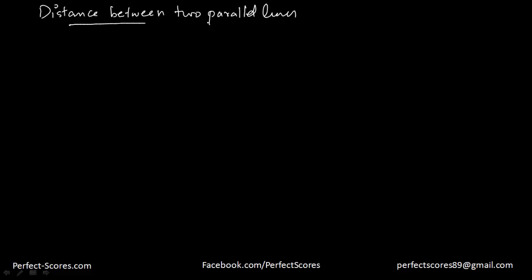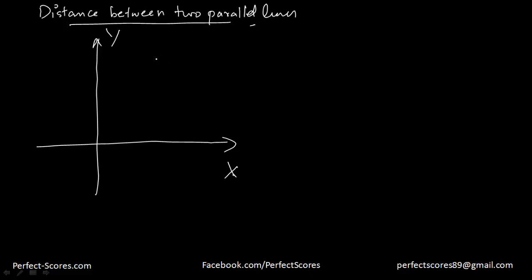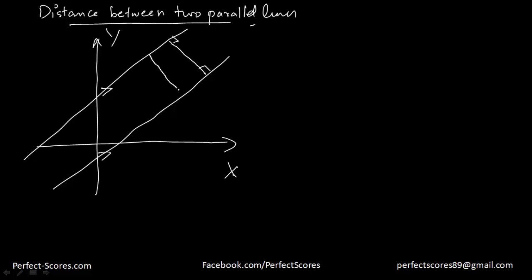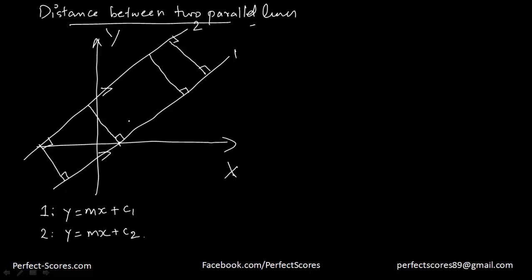Let's get started. We're going to have our y-axis and our x-axis. Let's suppose we have two parallel lines — this is one line and there is another line. Since these two lines are parallel, the perpendicular distance between them is always going to be the same. Let's say this is line one and this is line two. The equation of line one is y = mx + c1, and the second line is y = mx + c2. Since they are parallel, their slopes are the same.